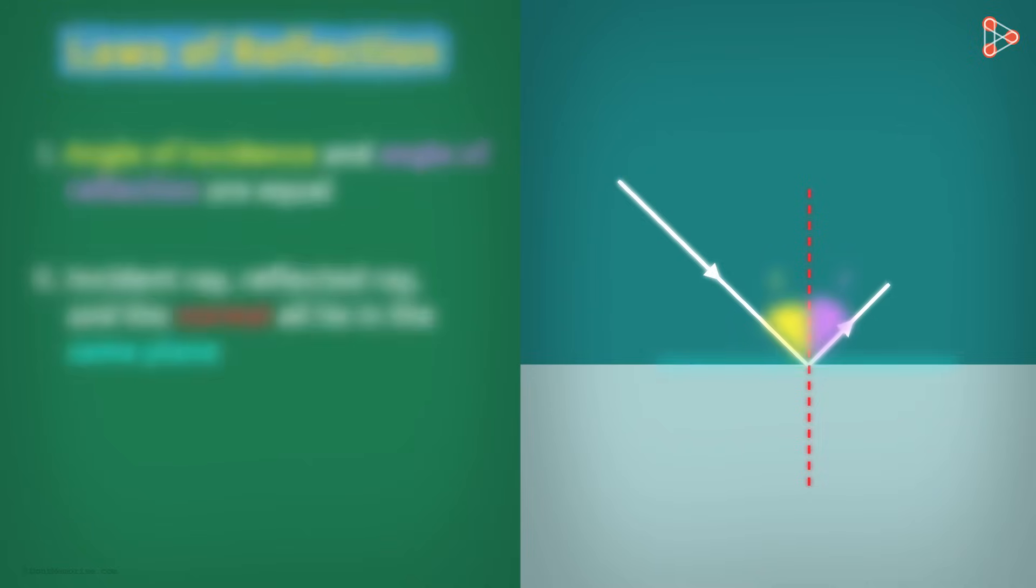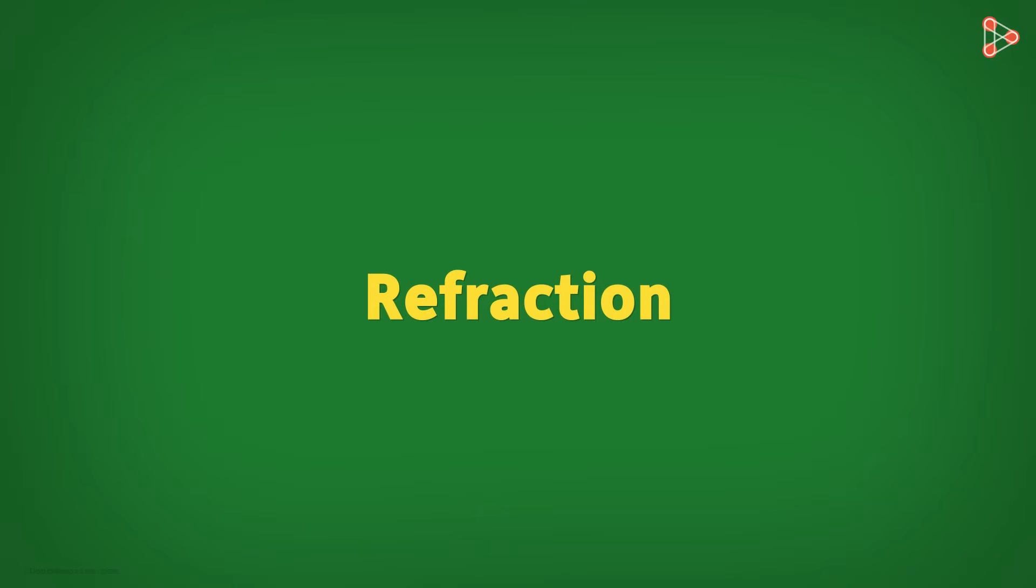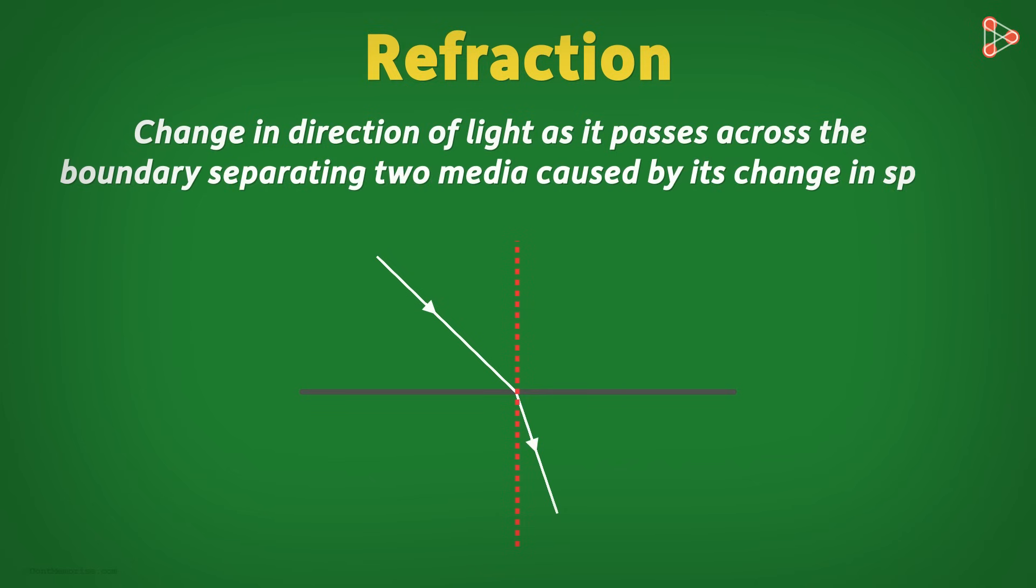Just like for reflection, there are some laws for refraction. And what is refraction? Refraction is the change in direction of light as it passes across the boundary separating two media, caused by its change in speed.